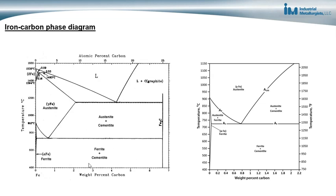There are also two-phase regions. This is a ferrite plus cementite phase field. This is the austenite plus cementite phase field. And this is the austenite plus ferrite phase field. The single-phase regions are ferrite, austenite, and iron carbide. The two-phase regions are in between the single-phase regions — austenite plus cementite lies between the austenite and iron carbide single-phase fields, and austenite plus ferrite lies between the austenite and ferrite single-phase fields.